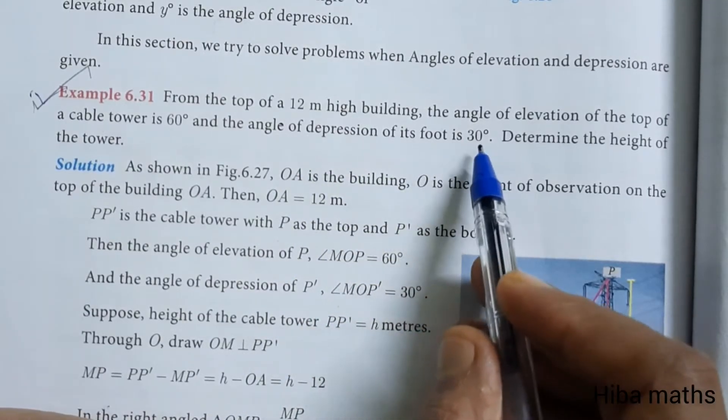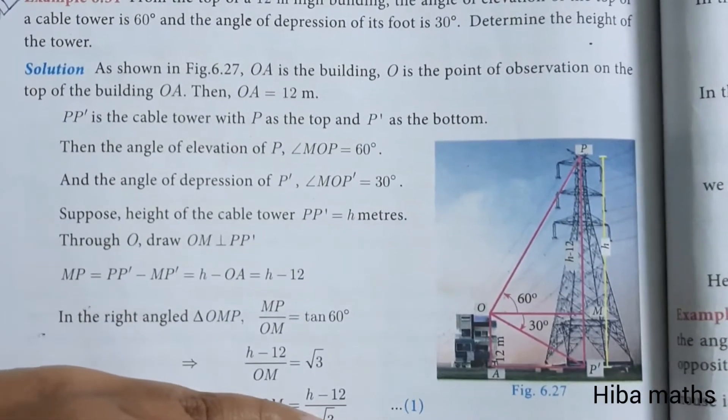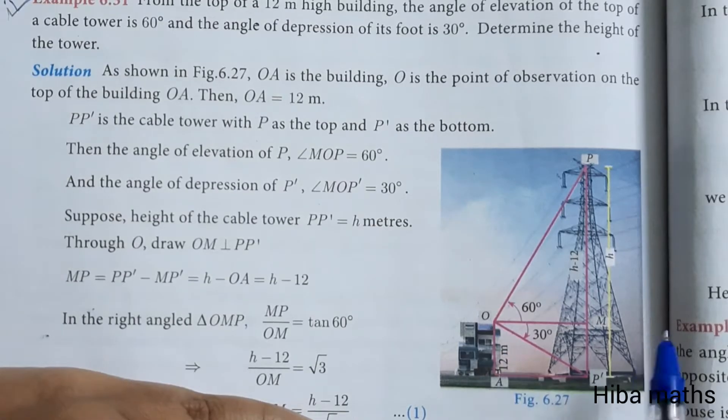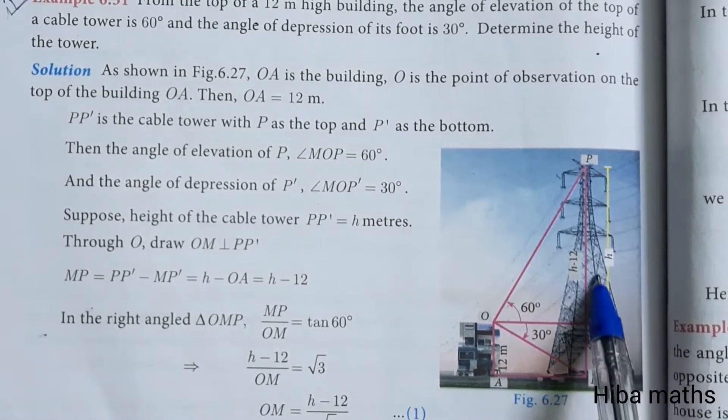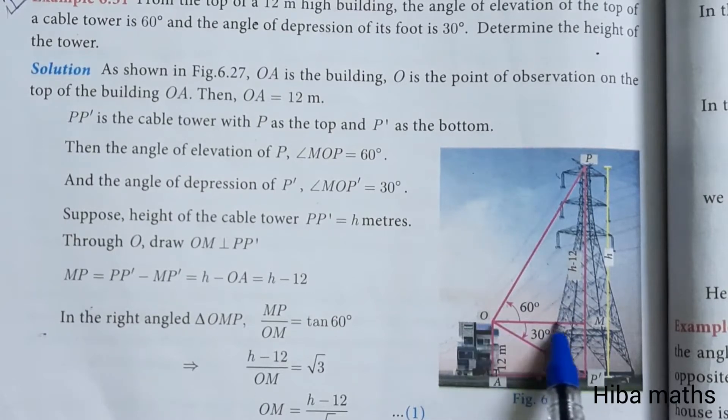Determine the height of the tower. Here is a building in the diagram and a tower which is 12 meters. The height of the building is 12 meters.